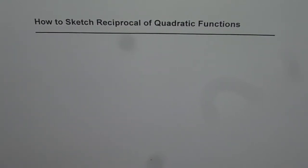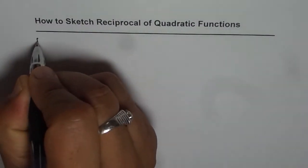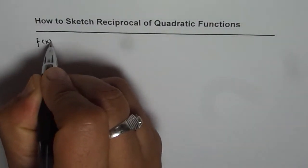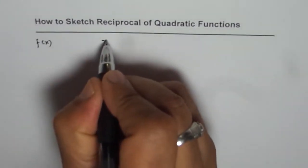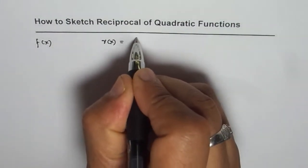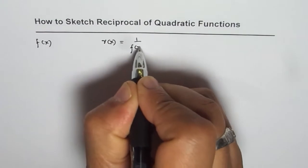How to sketch the reciprocal of a quadratic function? I am Anil Kumar and I will give you tips for sketching reciprocal of quadratic functions. We will start from the learnings from the previous videos. If f of x is the function, then the reciprocal function r of x can be written as 1 over f of x.